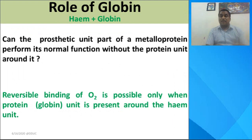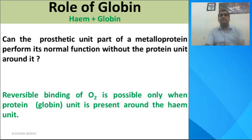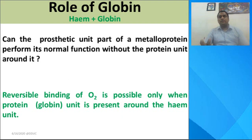Now let us see how heme and globin act together, making hemoglobin responsible for carrying, uptake, and release of the oxygen molecule in our biological system. Can heme act without globin? If globin is not present, can heme perform its role as an oxygen carrier? The answer is no. The reversible binding of oxygen is possible only when the protein or globin unit is present around the heme unit; they cannot perform their role individually.